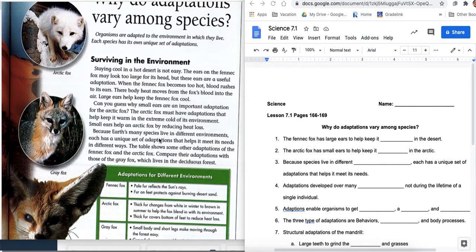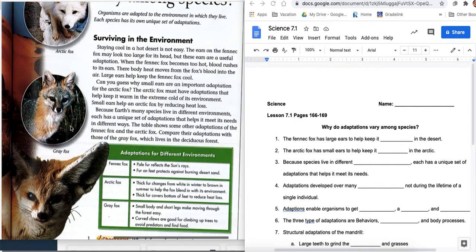Because Earth's many species live in different environments, number three in your notes, each has a unique set of adaptations that helps it to meet the needs in different ways. The table shows some other adaptations of the fennec fox and the arctic fox compare those with the gray fox, which lives in the deciduous forest. So then they took that and compared it with a fox that we might actually have seen or heard of in our lifetime, because there are gray foxes in Wisconsin.